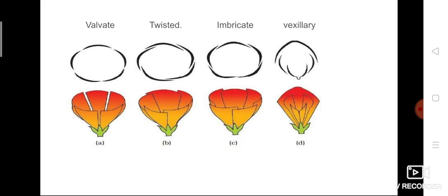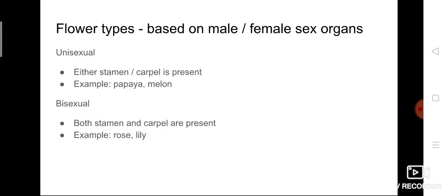So estivation is the arrangement of petals. Flowers are also classified based on sex organs. Flowers have a male sex organ and a female sex organ — that is, male sex cells and female sex cells. Based on these, flowers are classified into two types: unisexual and bisexual.